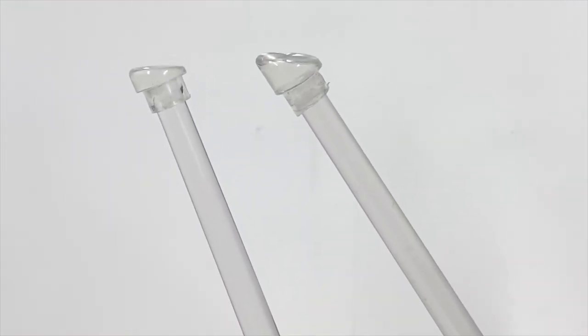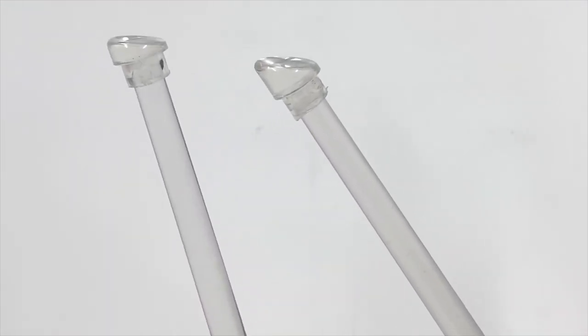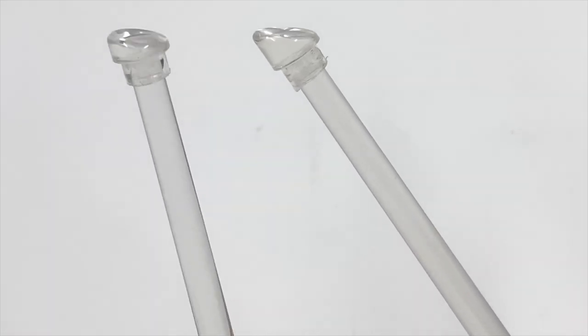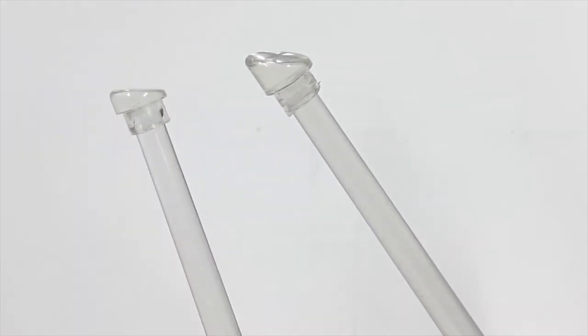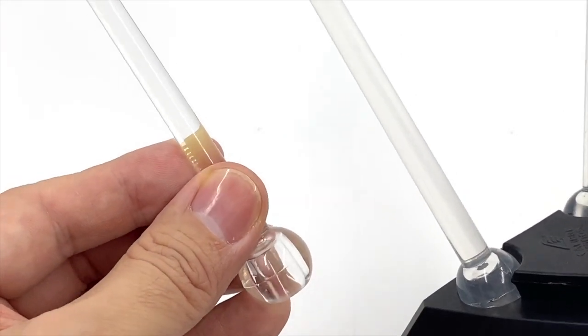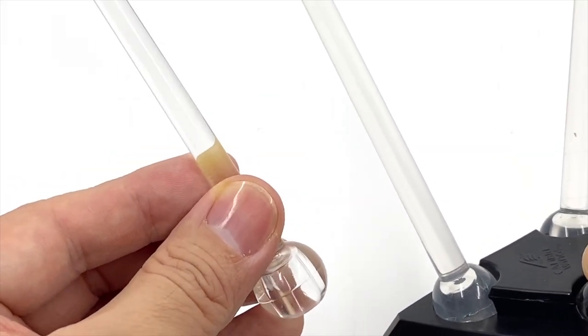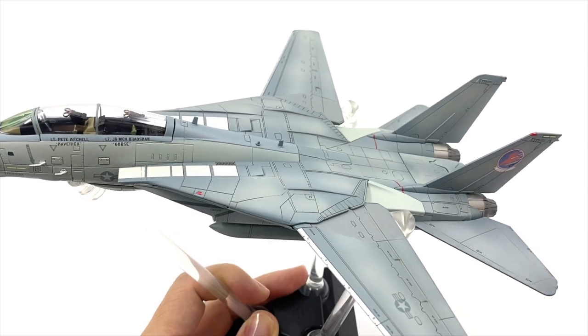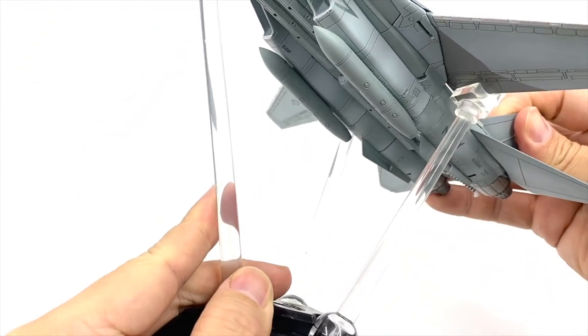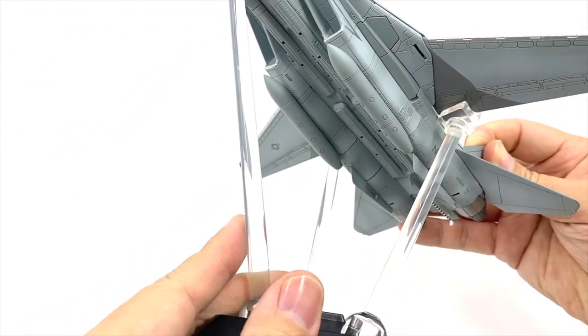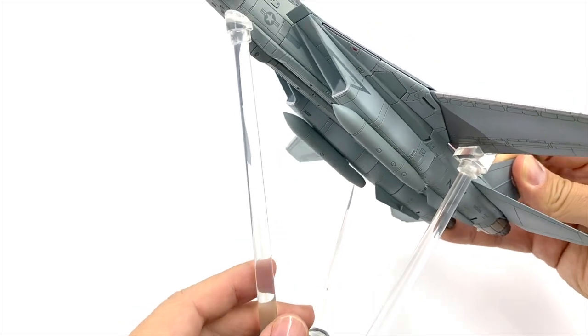The difference in angle allows you to position this surface flush to the model with a varying degree of tilt of the poles. The new tips allow for better support of the model.